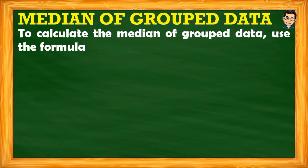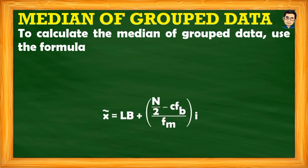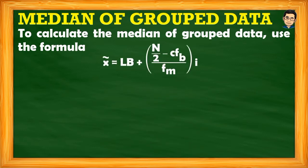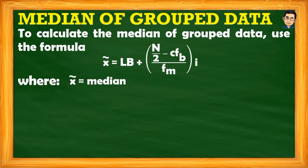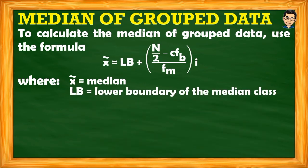Let us now proceed to the median of grouped data. I will introduce the formula to calculate it. For the mean we used x-bar; for the median, the symbol looks like a tilde over the x. Here is the formula. The variables are: the median symbol, then lb — the lower boundary of the median class, which in some references is written differently.